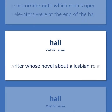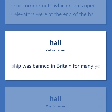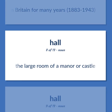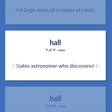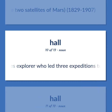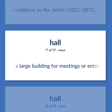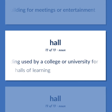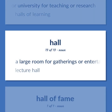Hall: Radclyffe Hall — English writer whose novel about a lesbian relationship was banned in Britain for many years (1883–1943). The large room of a manor or castle. Asaph Hall — United States astronomer who discovered Phobos and Deimos, the two satellites of Mars (1829–1907). Charles Francis Hall — United States explorer who led three expeditions to the Arctic (1821–1871). A large building for meetings or entertainment. A large building used by a college or university for teaching or research — halls of learning. A large room for gatherings or entertainment — lecture hall.